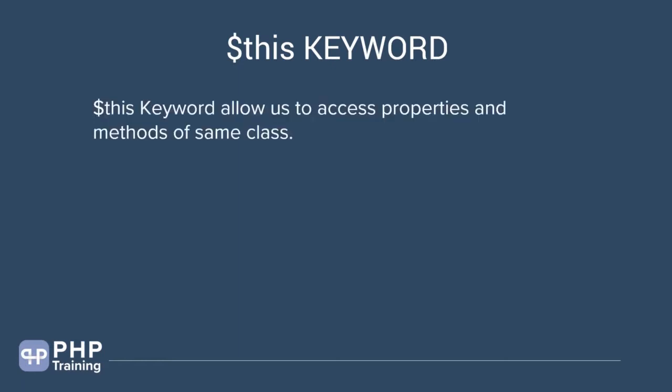Hello and welcome to the lecture on the $this keyword. The $this keyword allows you to access properties and methods of the same class. $this indicates the instance of the class. So inside the class, which is a blueprint of an object, you will not have an object instance. $this basically refers to an object instance inside the class — whichever object is used for that class, $this will refer to that specific object.